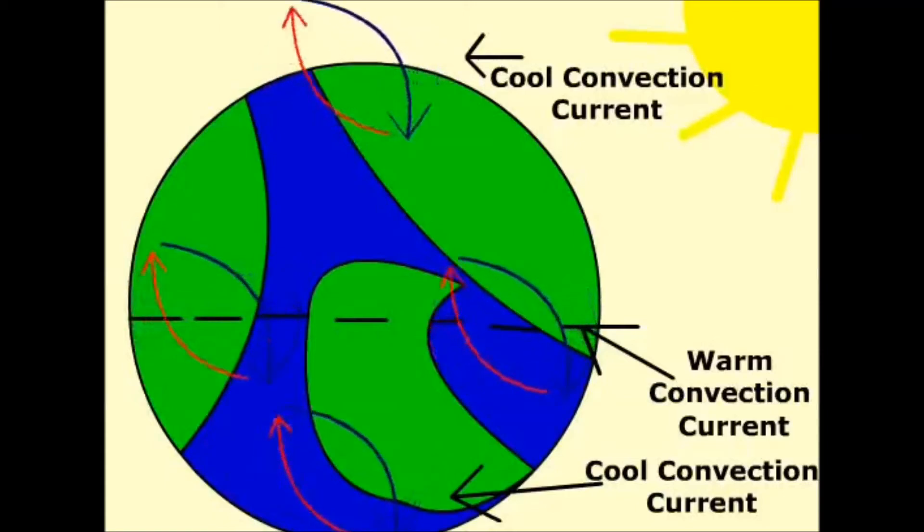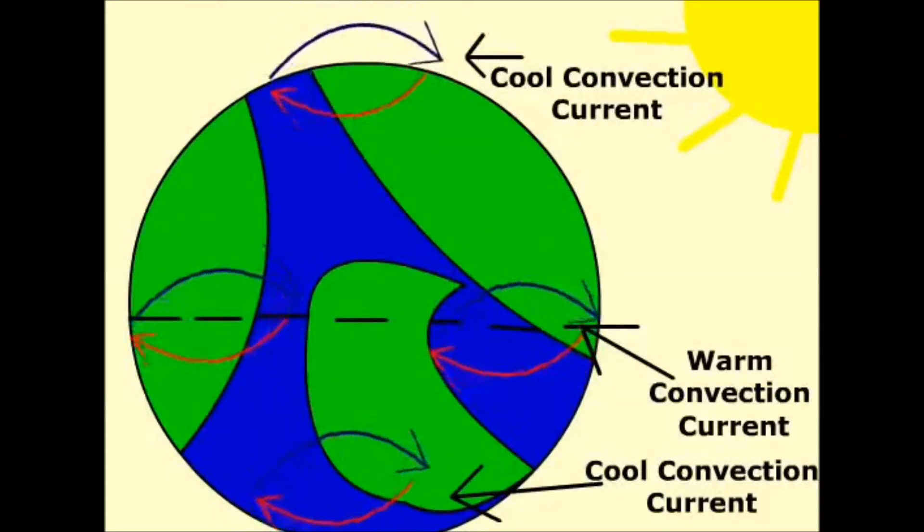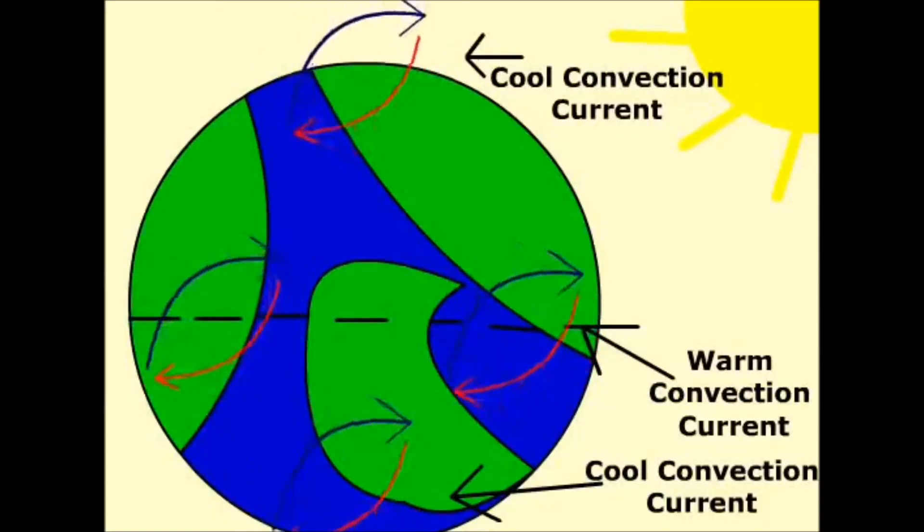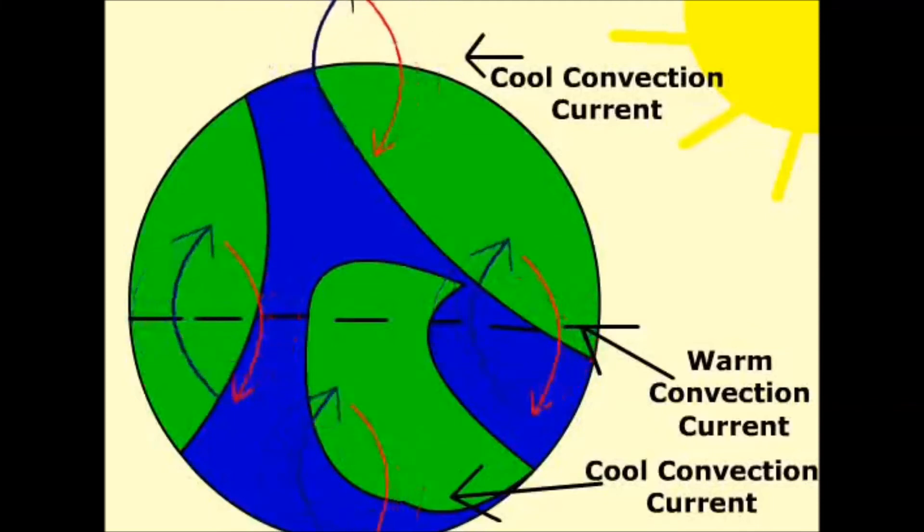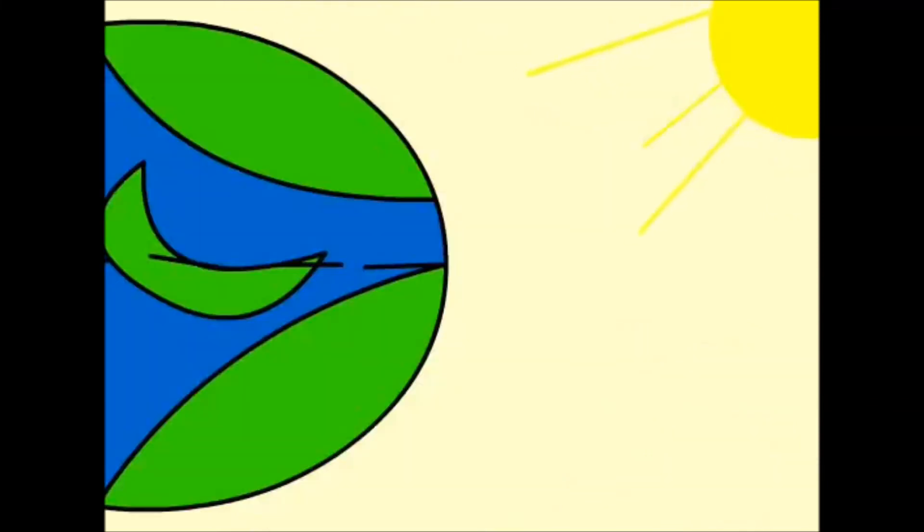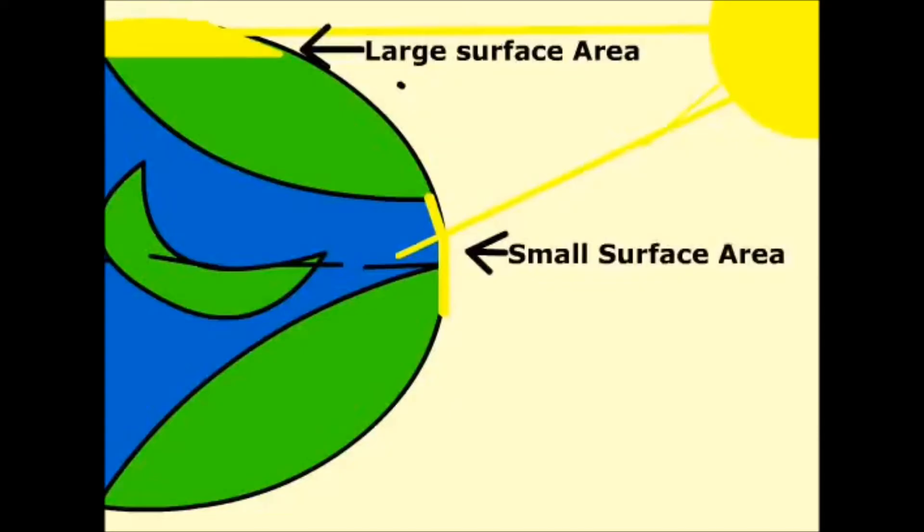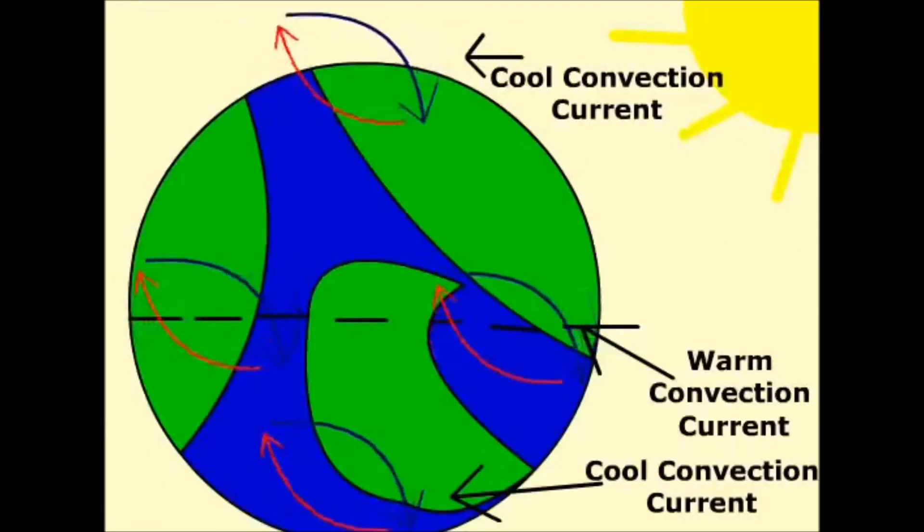Convection currents are formed all across the planet. Some are generally warmer and cooler than others because it all depends on the surface area available for the sun's energy to be distributed across. Small surface areas like the equator result in higher temperatures, and larger surface areas like the poles result in lower temperatures, because the energy is more equally spread.